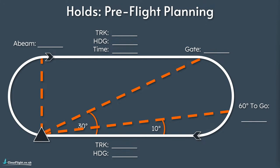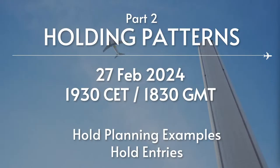That's all the theory behind a hold and everything we're going to plan on the ground before flying. That's everything we're going to cover for tonight. Next week we'll jump into part two and look at lots of examples, going through exactly how we calculate all these different points around the hold. We'll also have hold entries to talk about as well. Part two of holding patterns for both the EASA and UK pilots will be on the 27th of February, 19:30 European time or 18:30 UK time.